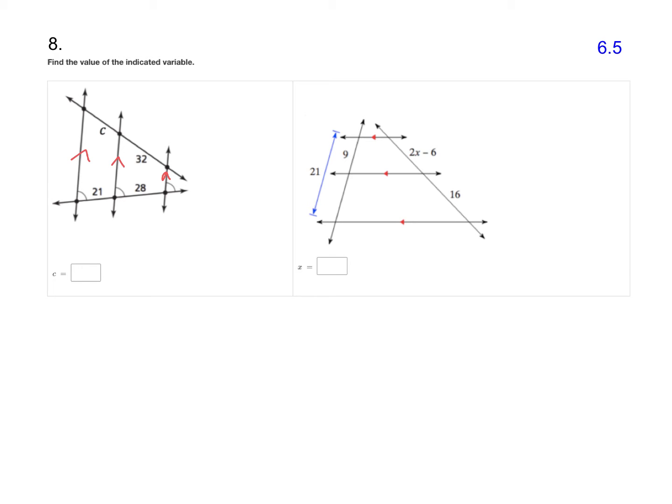And we know that the segments intercepted on the transversals have to be proportional to each other. So the C over 32 would have to match up with the 21 over 28.